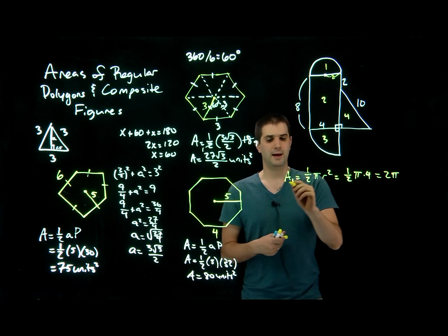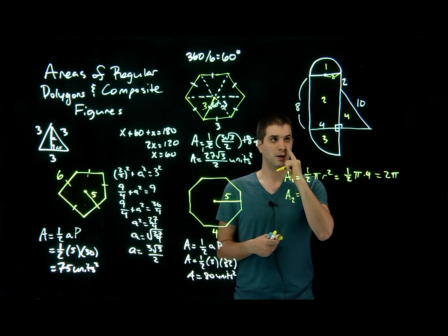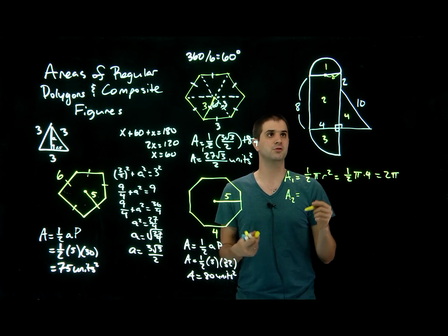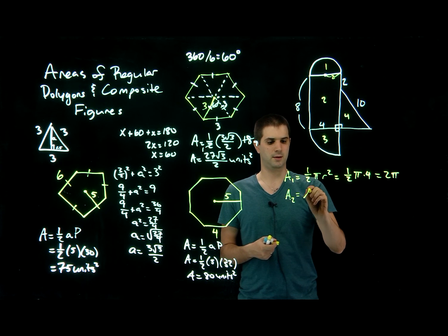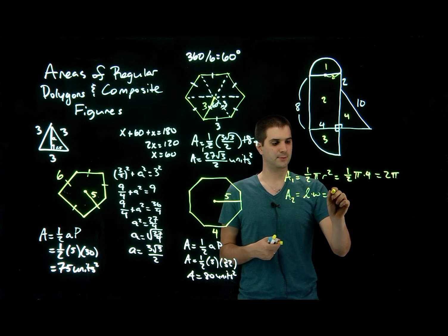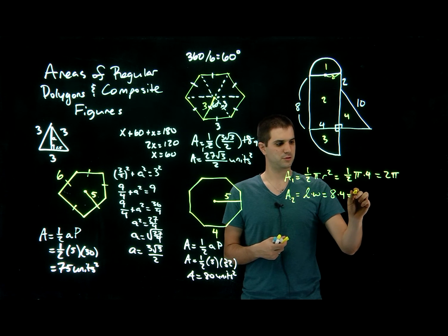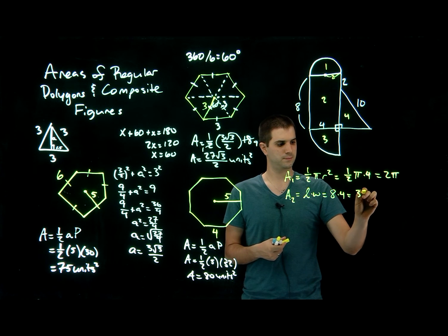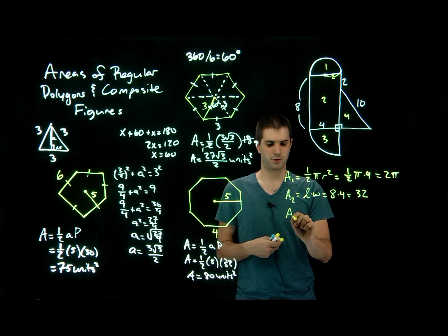The area of shape 2 — it's just a rectangle — is length times width, which equals 8 times 4, which equals 32.